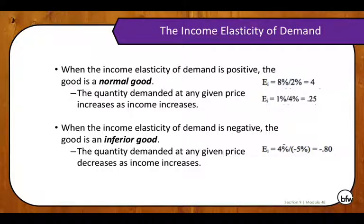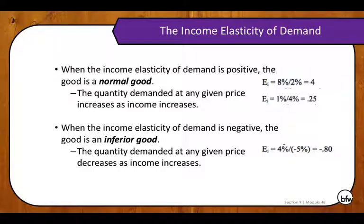With both cross-price elasticity of demand and income elasticity of demand, we don't drop the negative sign — we care about the value. Whether it's positive or negative tells us something about the good. For cross-price elasticity, the sign tells us whether the good is a complement, substitute, or unrelated. With income elasticity, it tells us whether the good is normal or inferior, and if normal, the magnitude tells us whether it's a necessity or a luxury. With an inferior good, there's really no distinction between luxury and necessity.